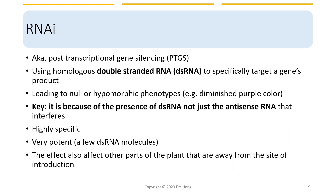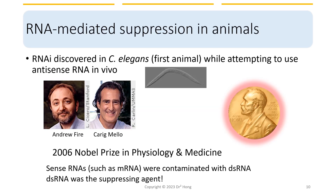Co-suppression occurs via a mechanism known as post-transcriptional gene silencing, or PTGS, in which silenced genes are still actively transcribed, but the resulting messenger RNAs are degraded before they can be translated into proteins, leading to null or hypomorphic phenotypes, such as diminished purple color. The key here is that the presence of a few copies of double-stranded RNA — and not just antisense RNA — interferes with gene expression. The effect also spreads to other parts of the plant away from the site of introduction.